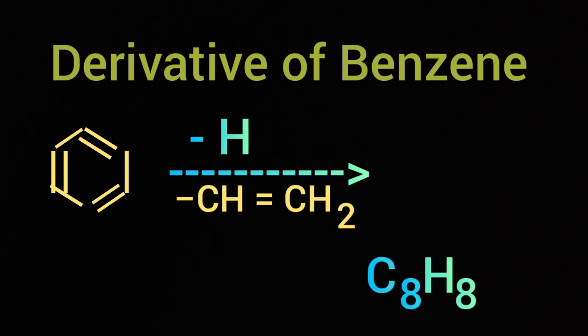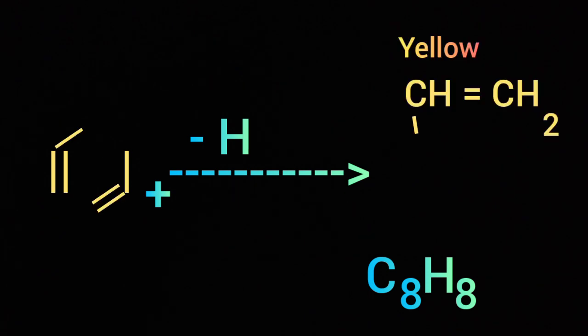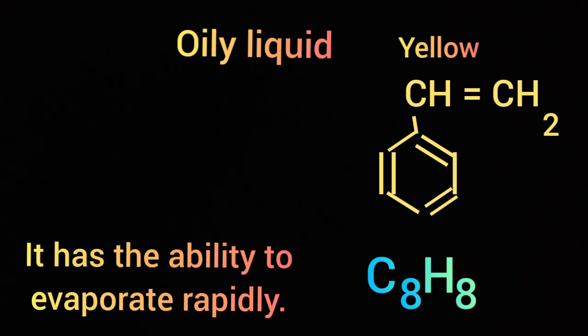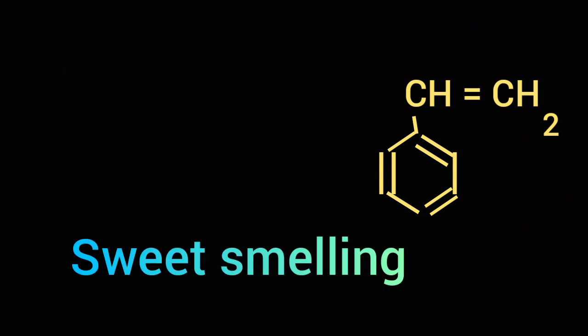It is a colorless liquid, sometimes it appears yellow in color. It is oily. Small amounts of styrene are sweet smelling; in large amounts it produces a less pleasant odor.